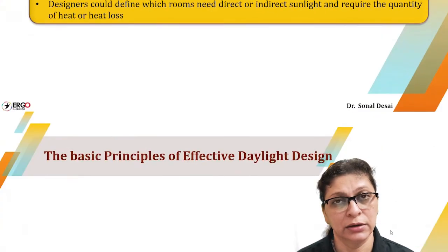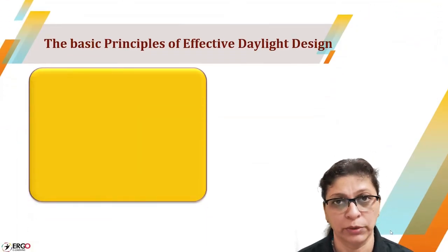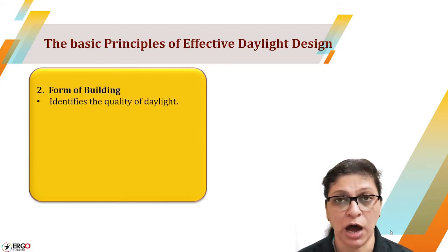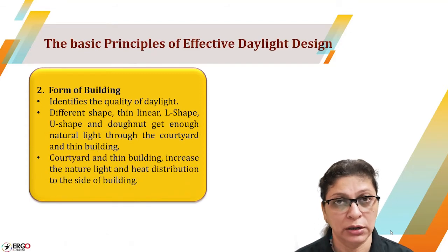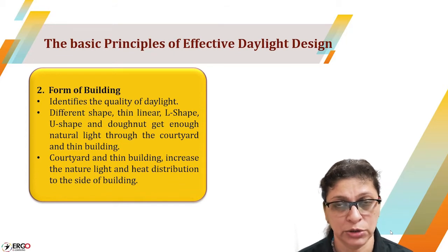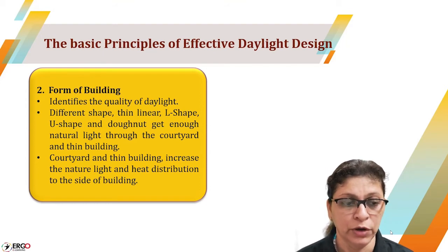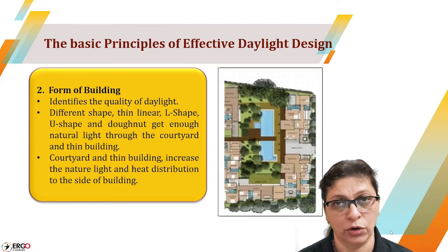The second affecting parameter of daylighting is the shape of the building, which includes its major geometry. An L-shaped, U-shaped, circular, or donut-shaped building has maximum exposure and more daylight falls on it. Courtyard and atrium-style buildings will have more natural light falling on them, along with better heat distribution to the walls of the building.